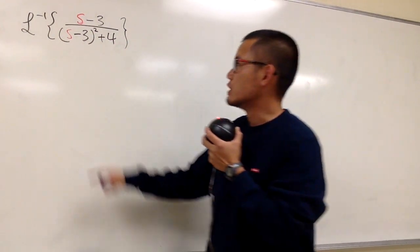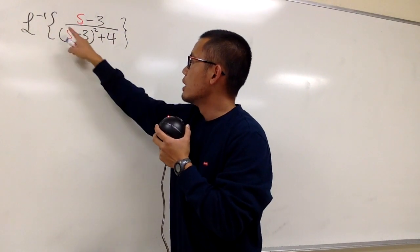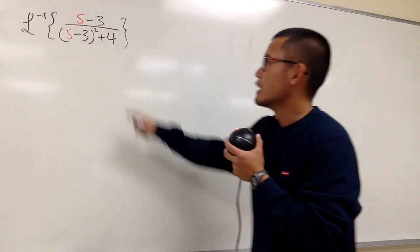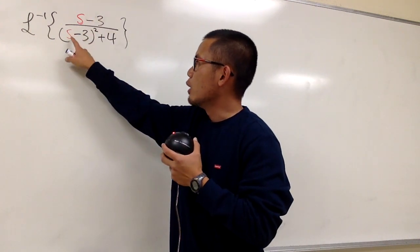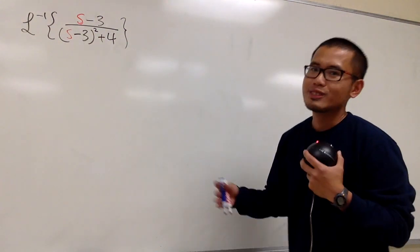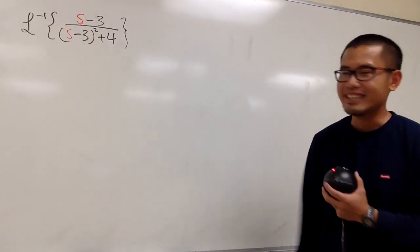All right, we're going to figure out the inverse Laplace transform of s minus 3 over (s minus 3) squared plus 4. Look at this—we have s minus 3 on the top and also s minus 3 in this parenthesis. We should use some kind of cosine, right?